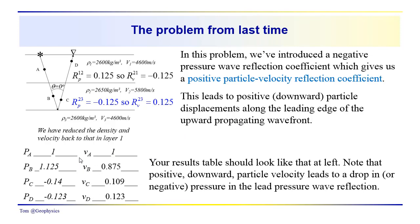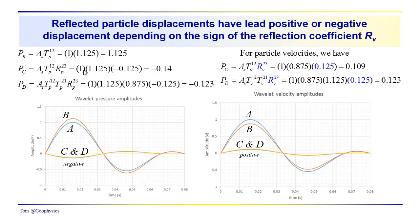In your table, hopefully you've got something that looks like this. You can see that we have negative pressure wave reflection coefficients here, and positive reflection coefficients for particle velocity — positive downward particle velocity — which produces a drop in pressure in the leading pressure wave reflection.